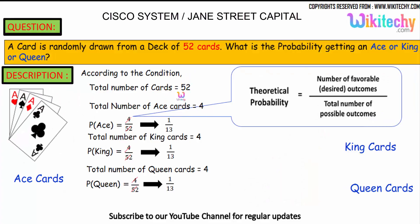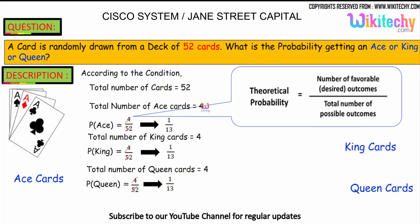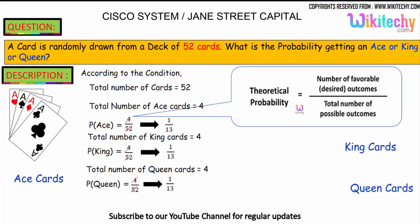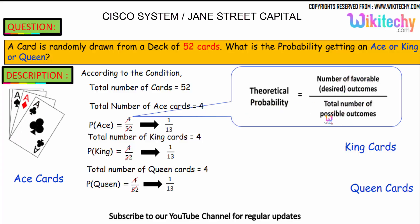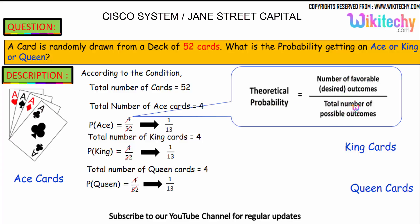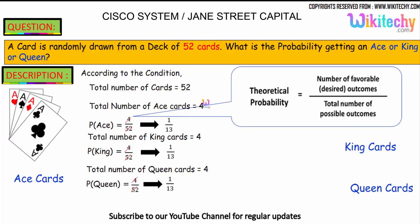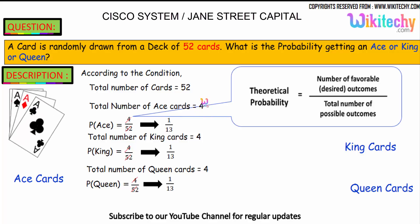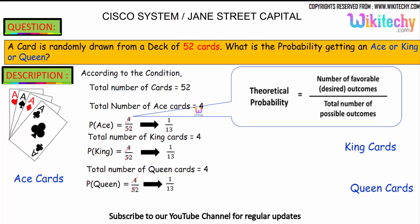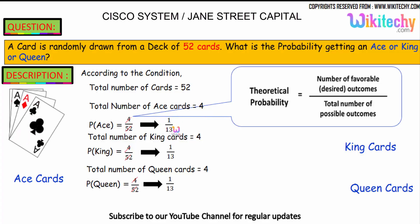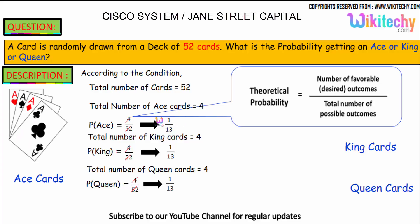The total number of cards is 52. Probability is number of favorable outcomes divided by total number of possible outcomes. The total number of ace cards is 4, so 4 divided by 52. The probability of ace is 1/13.